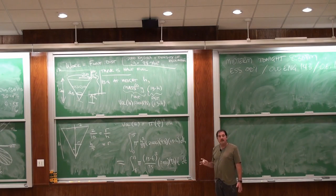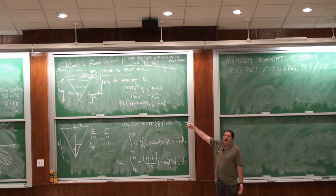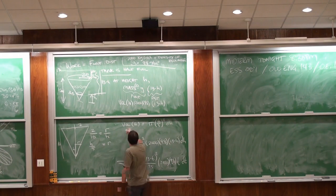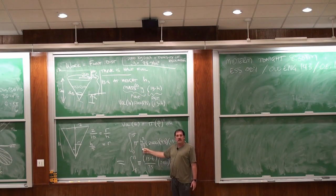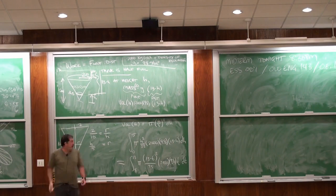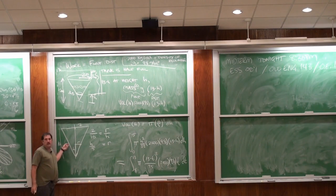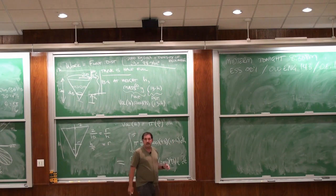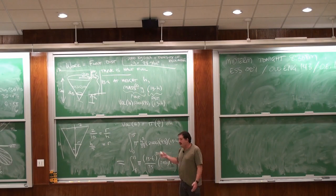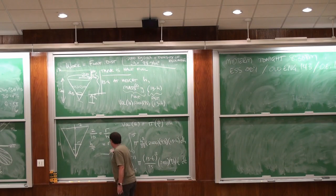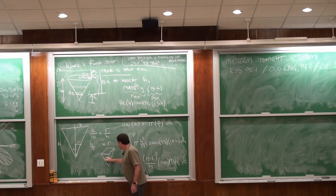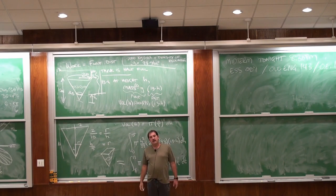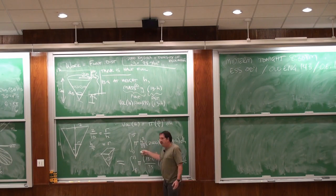Let's change this problem so the cross-section is a square — so instead of a cylindrical tank, it's now a pyramidal tank. All that will change is this one calculation. Instead of pi h squared over 25, the side length of the square will be 2h over 5, so the area becomes 4h squared over 25. Everything else is the same, because the cross-section is now a square.